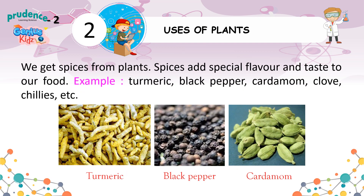We get spices from plants. Spices add special flavor and taste to our food. Examples include turmeric, black pepper, cardamom, clove, chillies, etc.